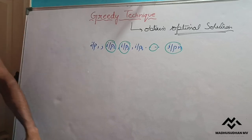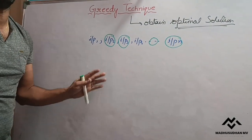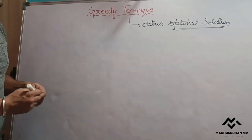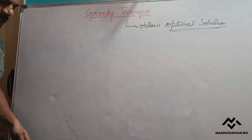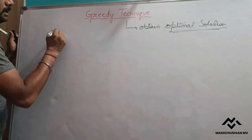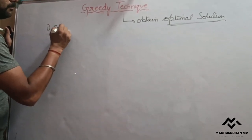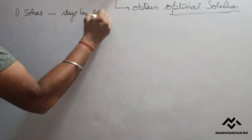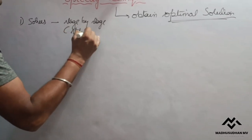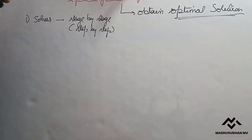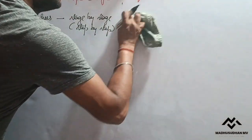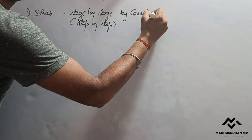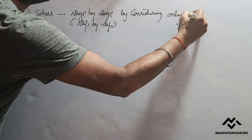Now we know what greedy technique is and for what type of problems we apply it. Let's see how the greedy technique solves the problem — that is, the general plan of greedy technique. This greedy technique solves the problem stage by stage, or step by step, considering only one input at a time.